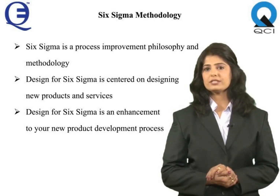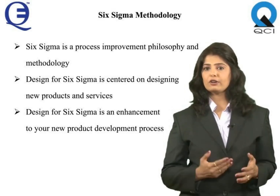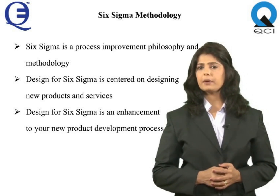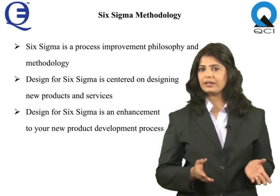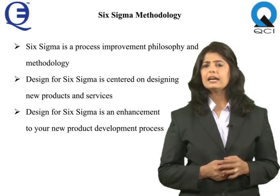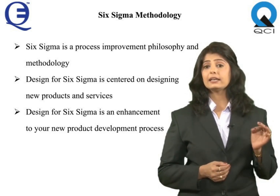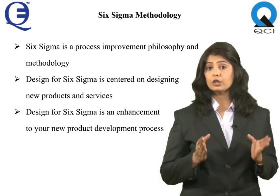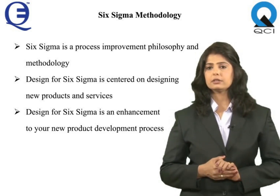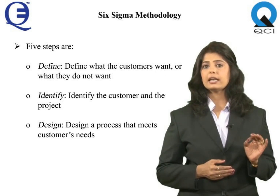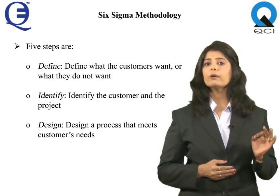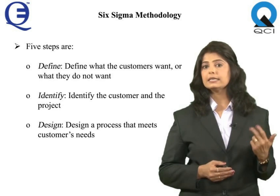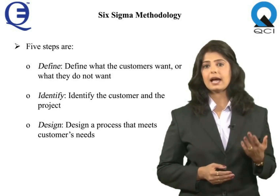Six Sigma is a process improvement philosophy and methodology, whereas Design for Six Sigma is centered on designing new products and services. Design for Six Sigma is an enhancement to your new product development process, not a replacement for it. This methodology can have the following five steps: Define, Identify, Design, Optimize, and Verify.